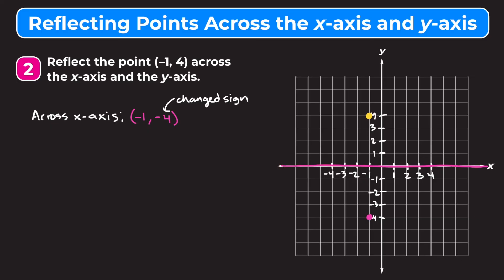Now let's reflect across the y-axis. I'll do it visually and then explain the shortcut. The y-axis is here, and we're reflecting the yellow point, so it ends up right here at the point (1, 4). We changed the sign of the x-coordinate — it was originally negative and now it's positive.